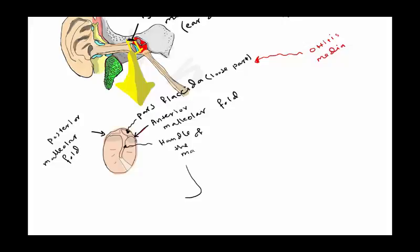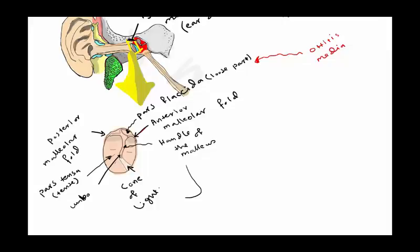This is the handle of the malleus, also called the umbo. This part is called the cone of light. And last but not least, pars tensa is the tense part of the tympanic membrane, and it is usually affected by malignant diseases like carcinoma.